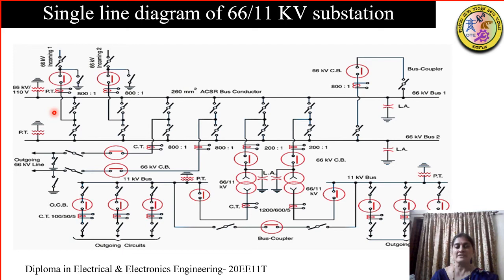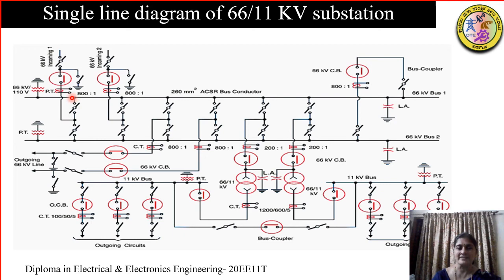We have already studied the different components of a substation. Now we are going to put all these components together to draw a single line diagram. In this line diagram, we can see that there are two incoming lines and two bus bars. The incoming lines are connected through an isolator and a circuit breaker. We also have a double break isolator here, a PT, and an earthing switch.